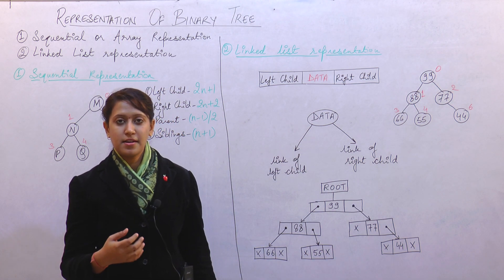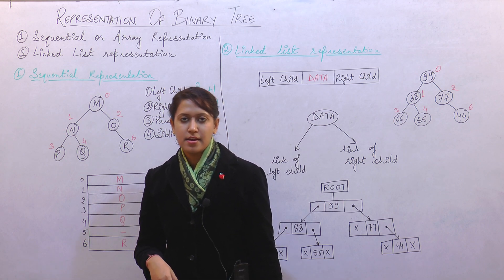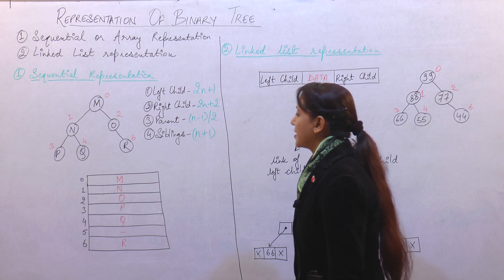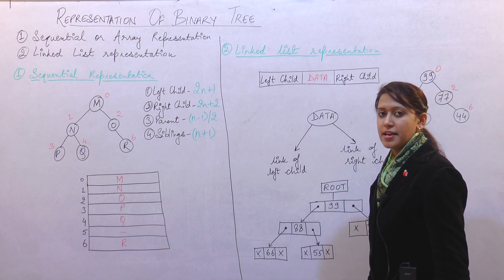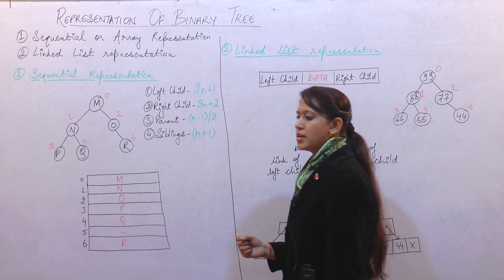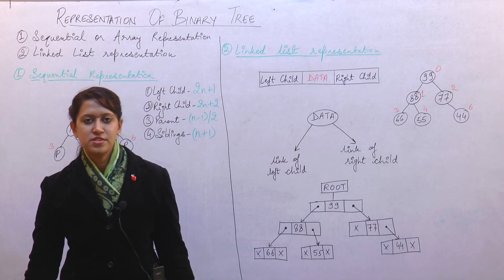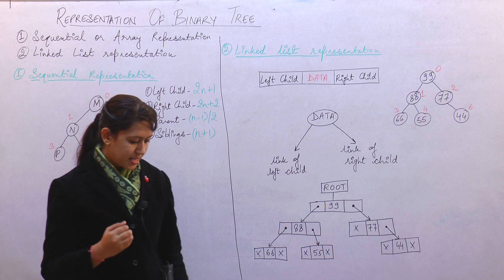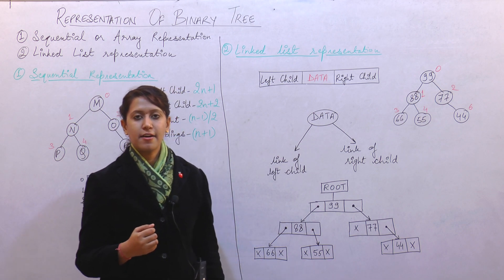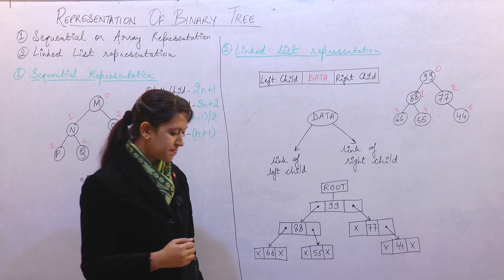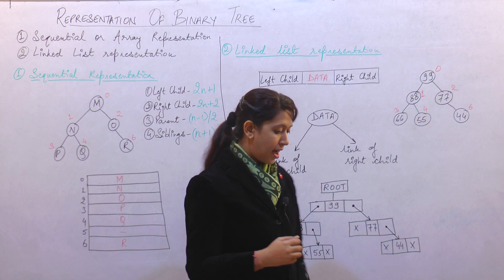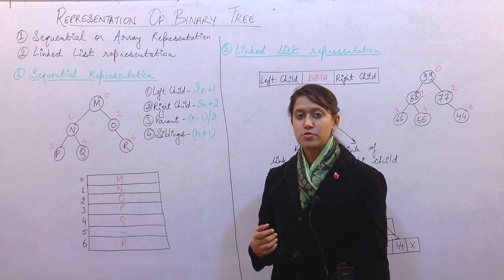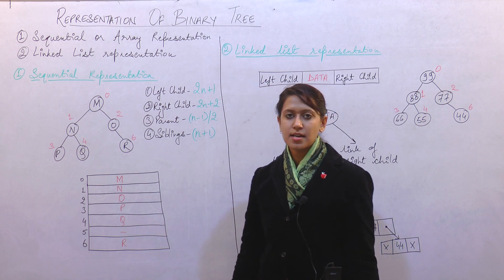A binary tree is a tree in which each node is having at most two branches. At most two branches means any node present in the binary tree can have at most two branches. That means either zero branches, one branch, or two branches, but not more than two branches are allowed.